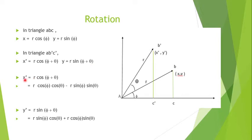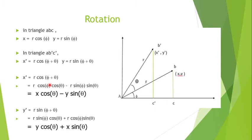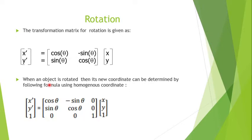We have x' = r cos(phi + theta). When this formula is expanded, we get x' = x cos(theta) - y sin(theta). Similarly, y' = r sin(phi + theta). When this is expanded, we get y' = y cos(theta) + x sin(theta). This is the transformation matrix for rotation. When an object is rotated, its new coordinates can be determined by the following formula using homogeneous coordinates.